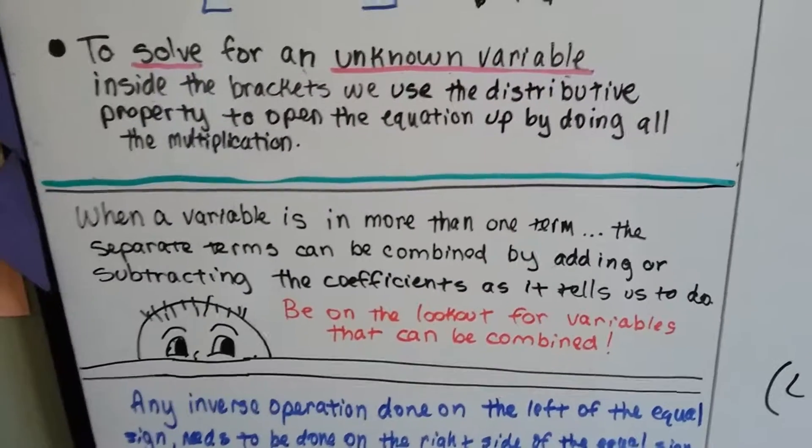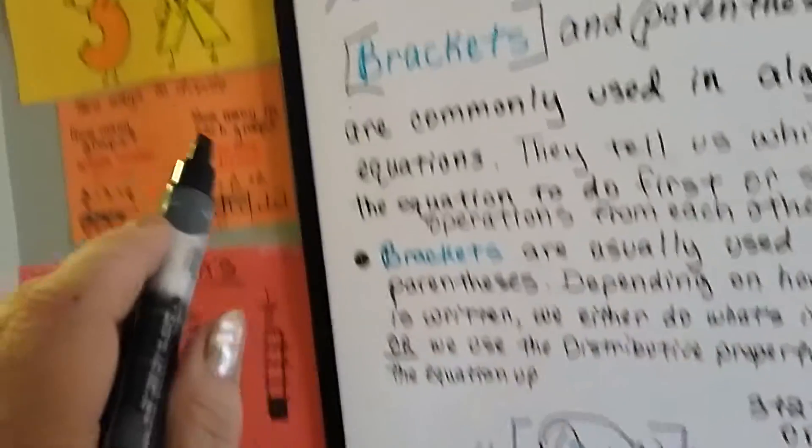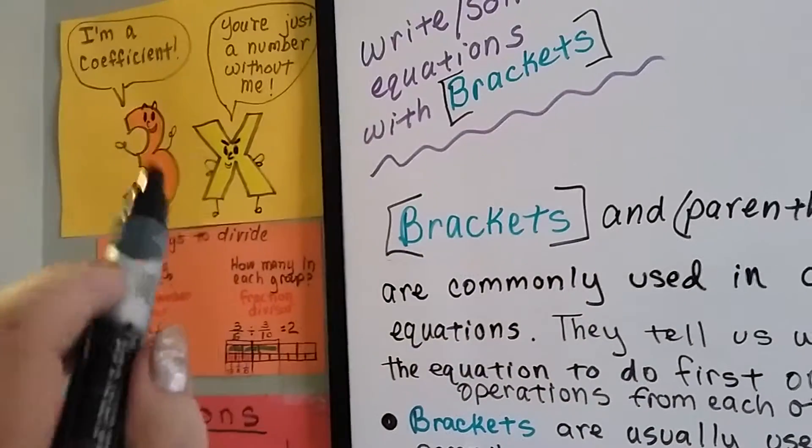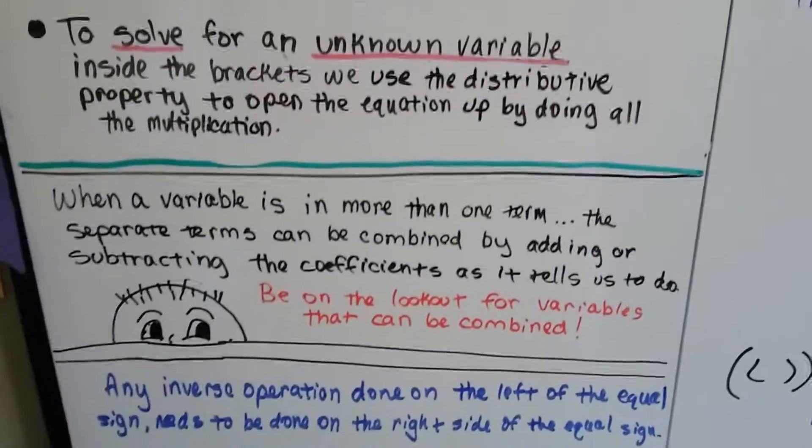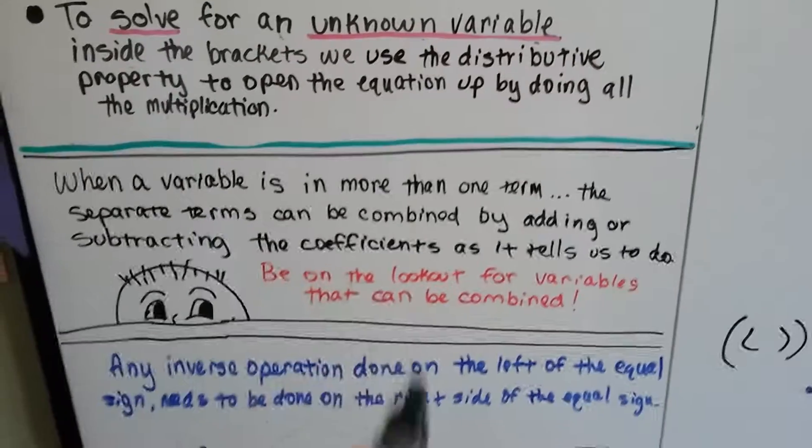We need to be on the lookout for those variables that can be combined. Remember, the coefficient is the number in front of the variable. Once this variable leaves, he's just a standalone number. So they can be added or subtracted to each other.